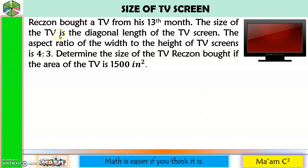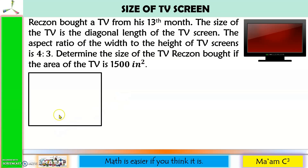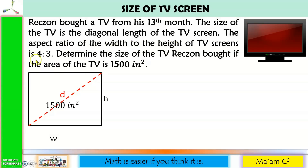Next one: Rekson bought a TV with his 13-month pay. The size of the TV is the diagonal length of the TV screen. The aspect ratio of the width to the height of TV screens is 4 to 3. Determine the size of the TV Rekson bought if the area of the TV is 1,500 inches squared. Let us draw the free body diagram of the TV. The size of the TV is the diagonal length — let us label it d. We do not know the measure of the width or the height.